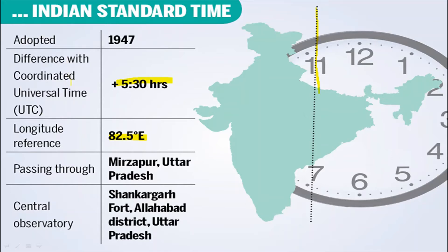Standard time is the time chosen and decided for a nation to follow. Local time is the time we can observe based on the position of the sun — what time the sun is rising and setting — which changes with every longitude line. But local standard time is the time selected as per the time zone, where the time will be the same across an entire region.